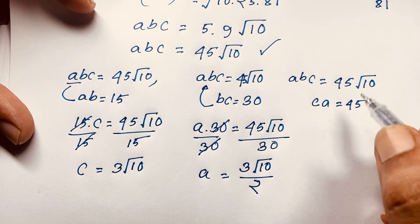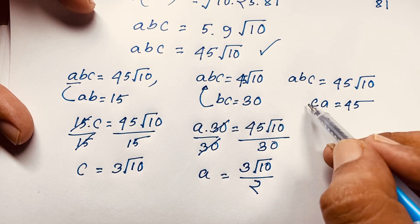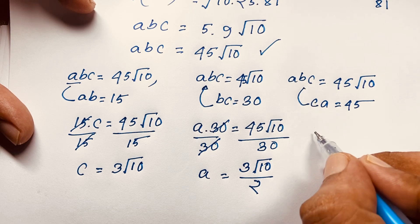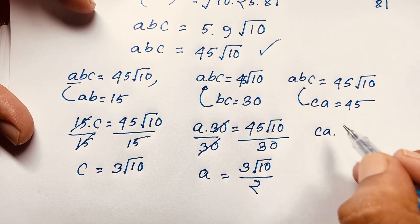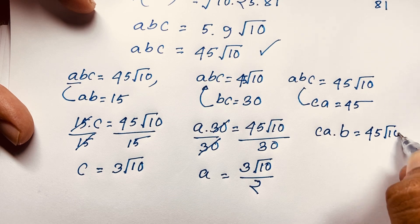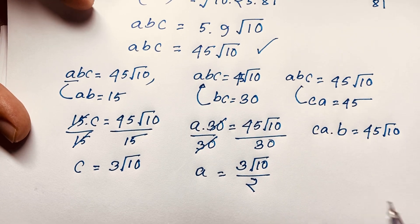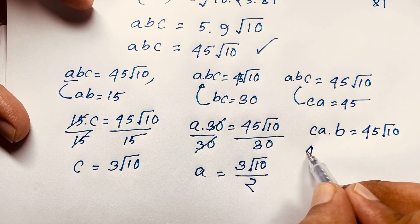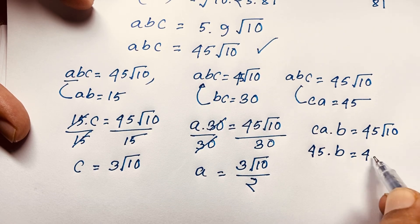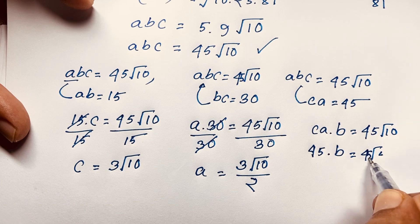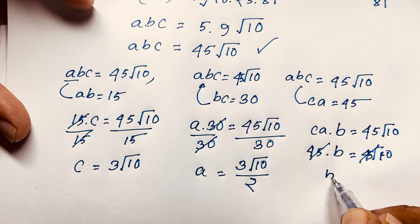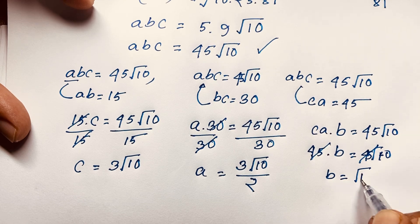To find b, use ca = 45 in abc = 45√10: 45 × b = 45√10. The 45s cancel, giving b = √10.